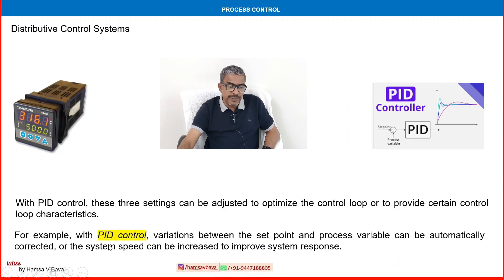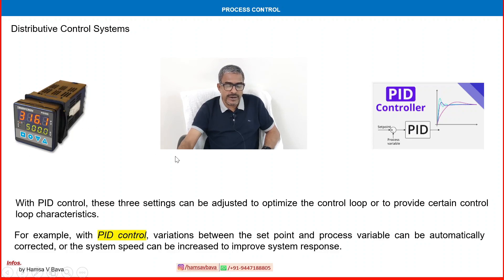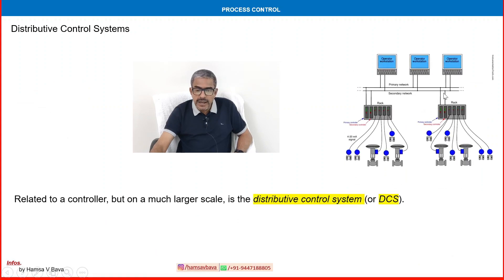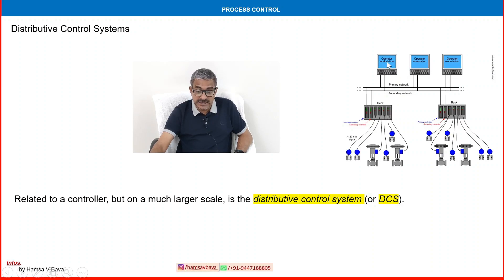For example, with the PID controller, variation between the set point and process variable can be automatically corrected, or the system speed can be increased to improve system response. From the field it goes to the local equipment room or hardware room, and from there to the man-machine interface — the DCS display where the operator communicates with field devices through instrumentation, communication hardware, and software.